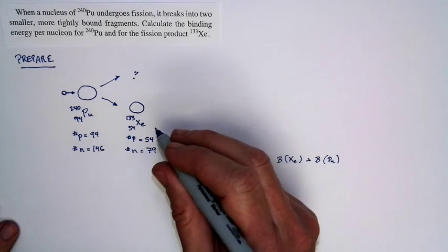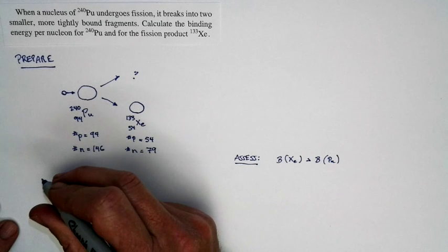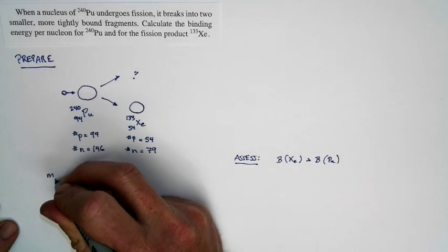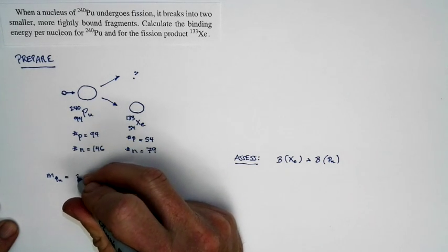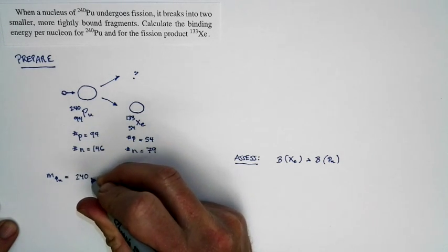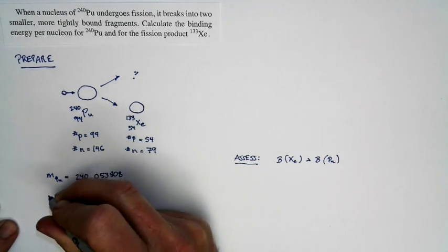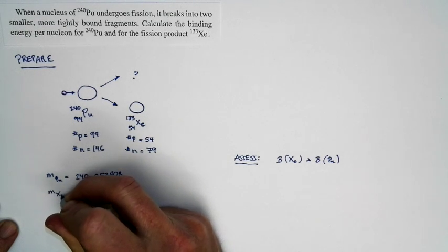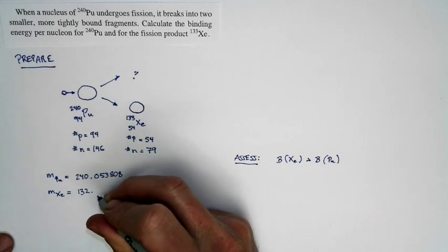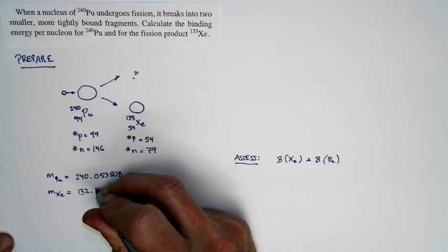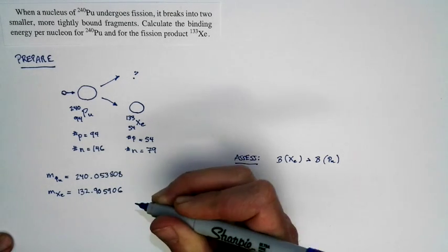Now, another thing we're going to need to do in order to solve this problem is collect some numbers. And first off, we'll do this. The mass of the plutonium atom, and we can look that up in the appendix in the textbook. The mass of the plutonium is 240.053808. The mass of the xenon nucleus is 132.905906.